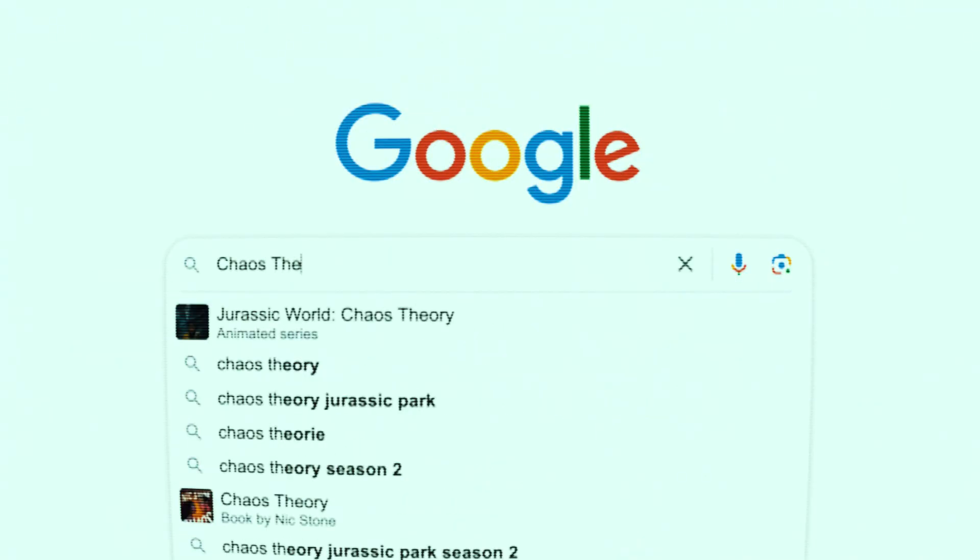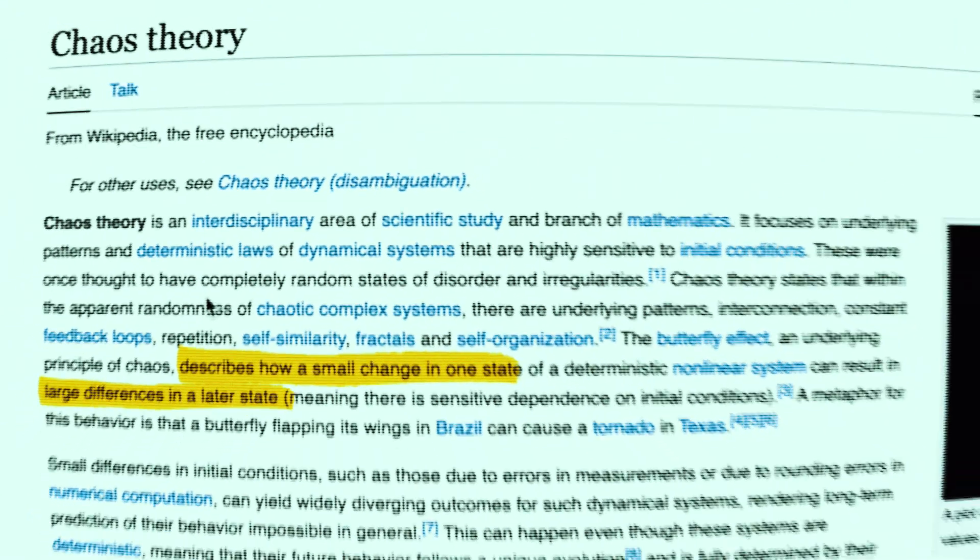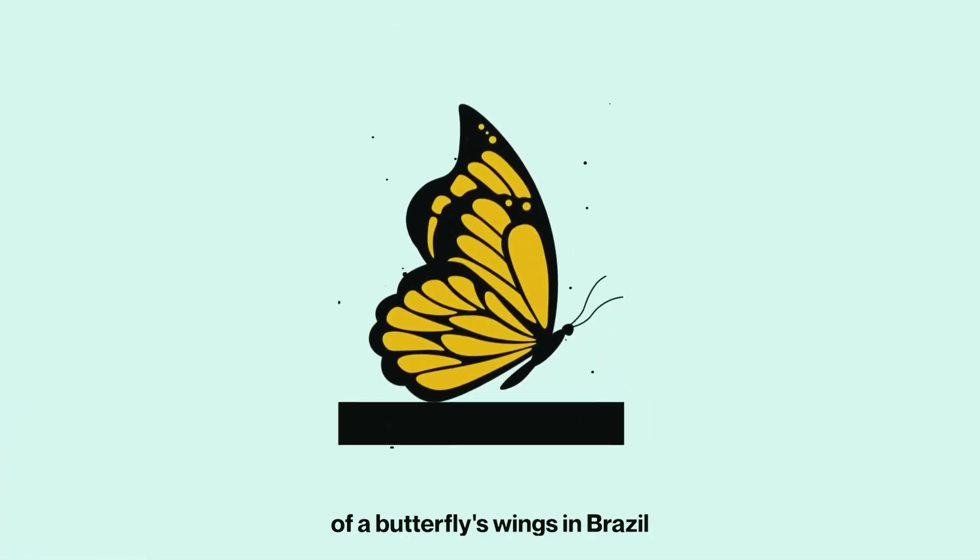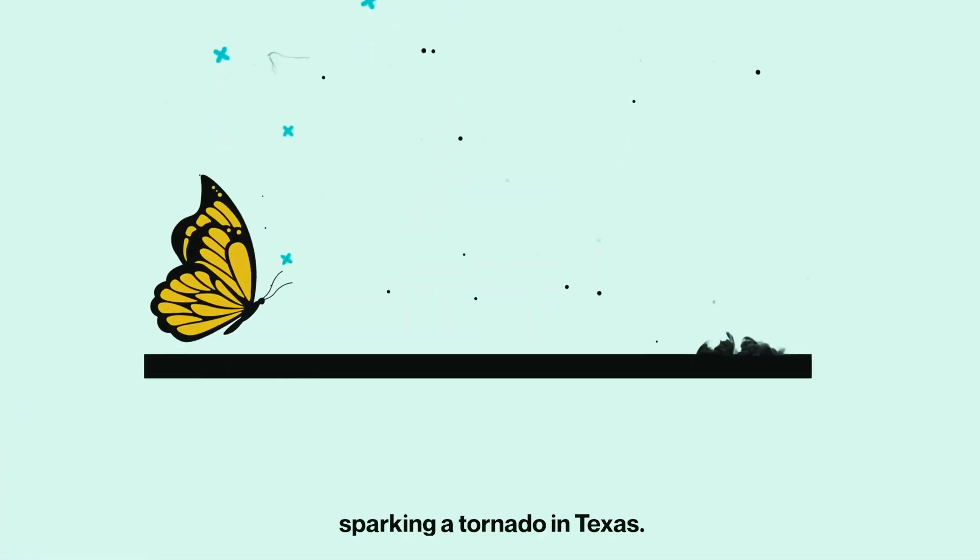Chaos theory suggests that minuscule changes in initial conditions can lead to massive differences later on. Think of it as the flapping of a butterfly's wings in Brazil sparking a tornado in Texas. The double pendulum captures this theory perfectly.